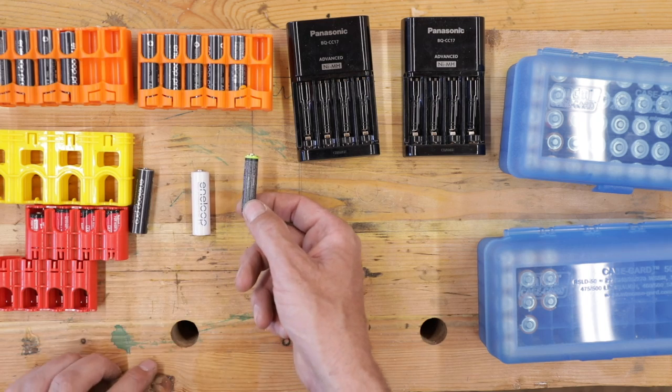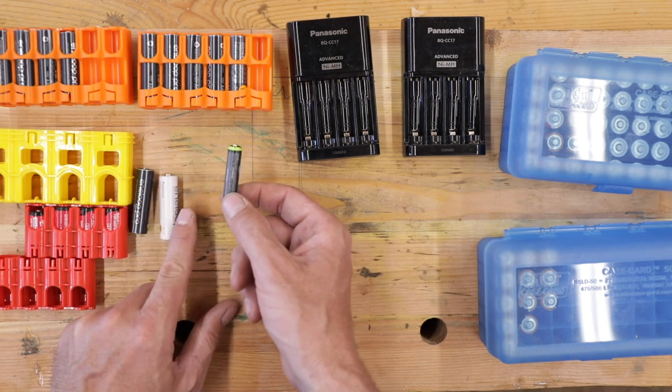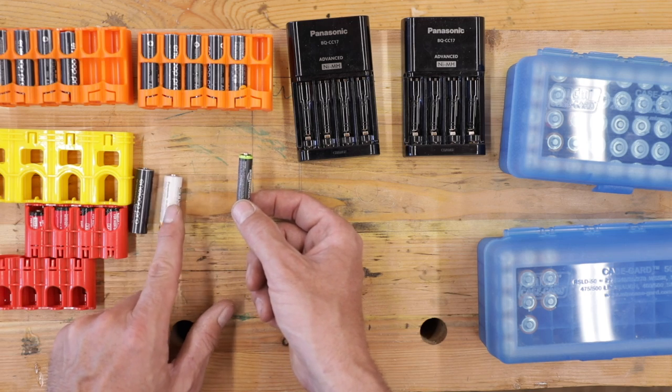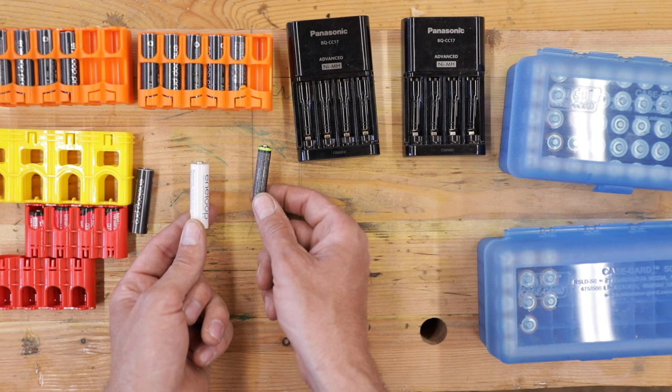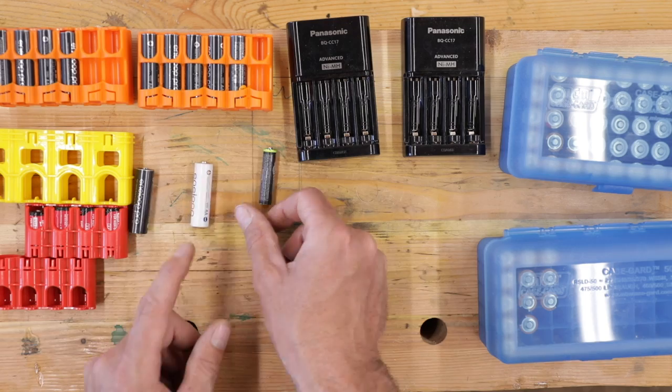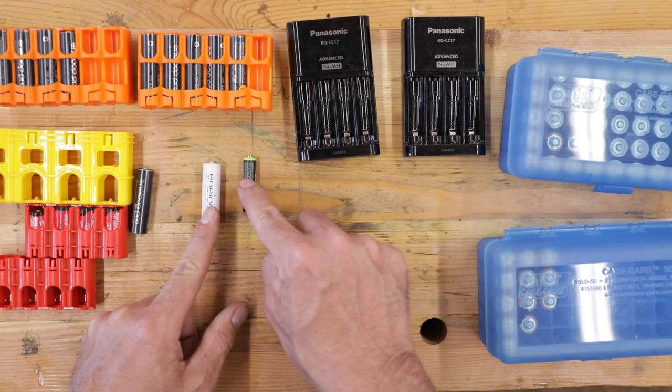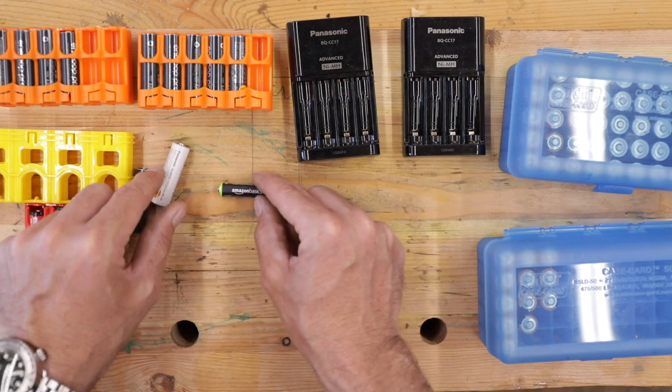I believe it's the exact same battery. And when you get into the AAAs with these, these are just under right at $1 a piece. And the Eneloops for the AAAs are $2.75. So you can essentially have almost three to one of these, which I believe, in my opinion, are the same battery.